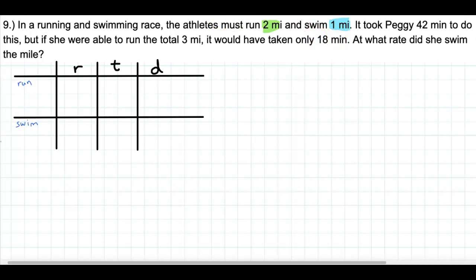Let's first convert these, the times, to hours. So 42 out of 60, common factor there looks like 6, so 7 tenths of an hour.